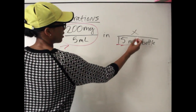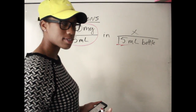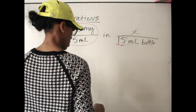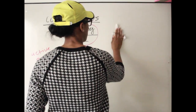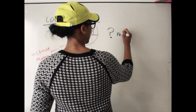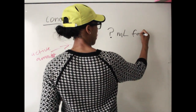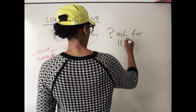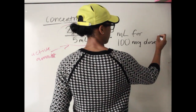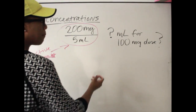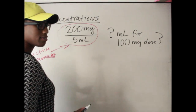So my next question to you would be: how many milliliters do we need for a 100 milligram dose? So how many mLs do we need for a 100 milligram dose if 200 mg per 5 mL is the active amount?